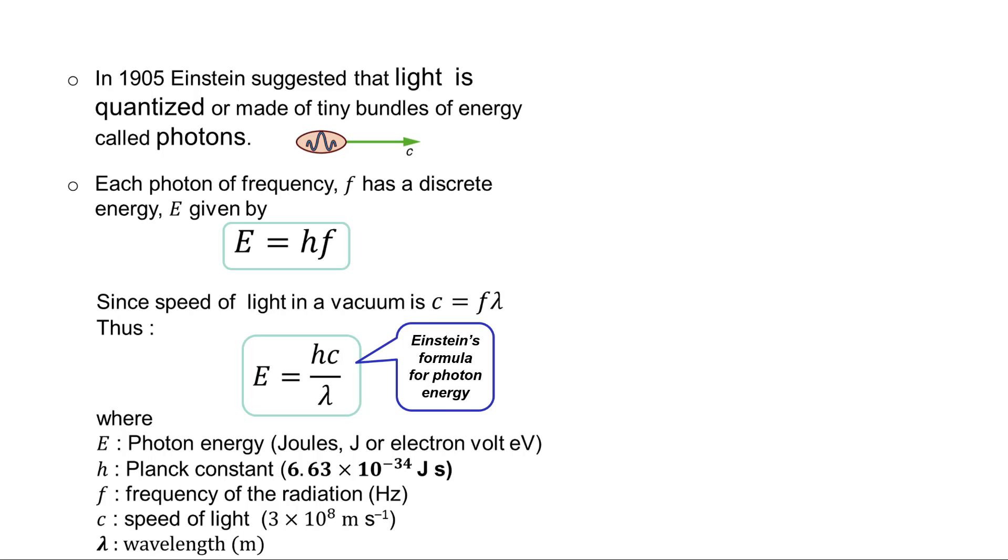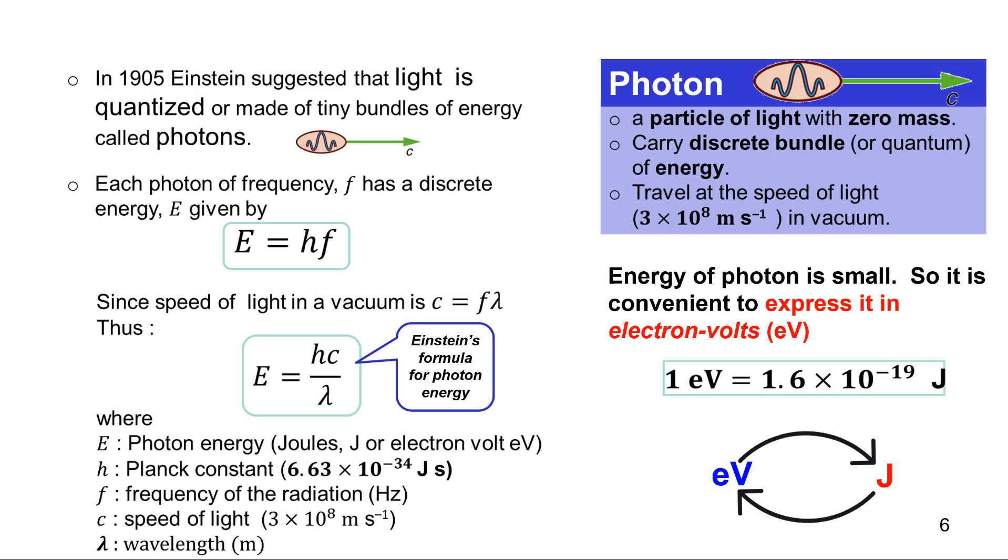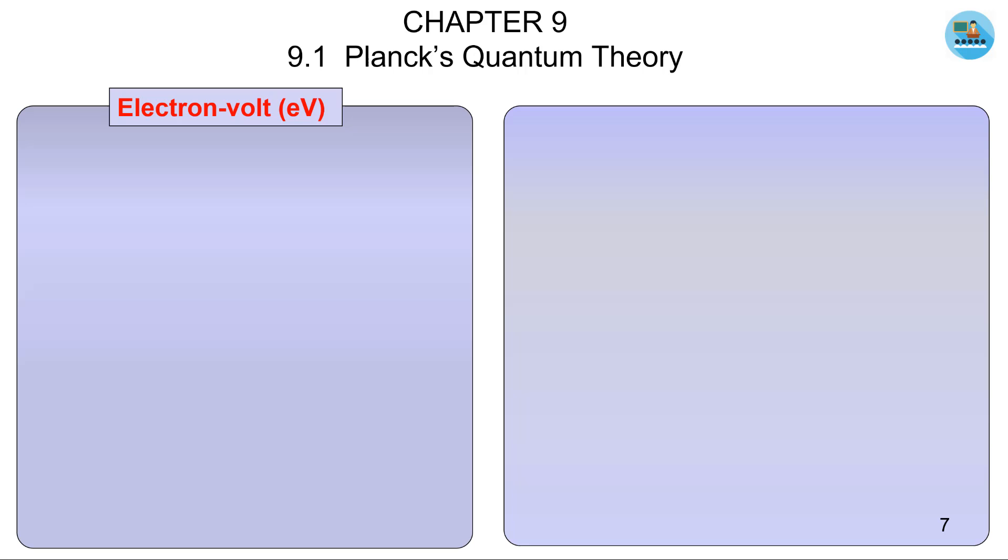And since we know that C equals to F lambda, where C is the speed of light, we combine these two, and we get Einstein's formula for photon energy: E equals to HC over lambda, where H is the Planck's constant, C is the speed of light, and lambda is the wavelength of that particular photon.